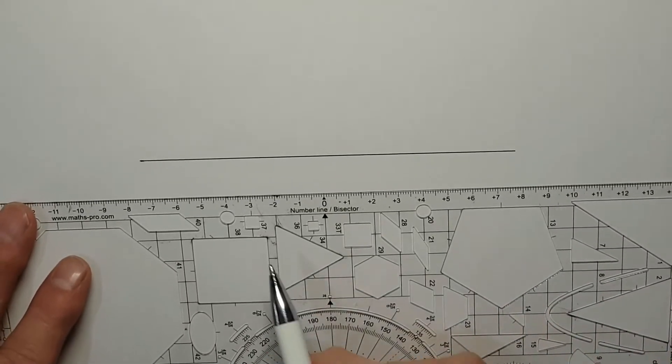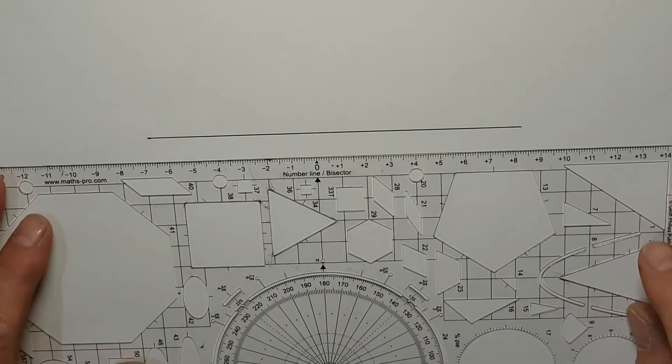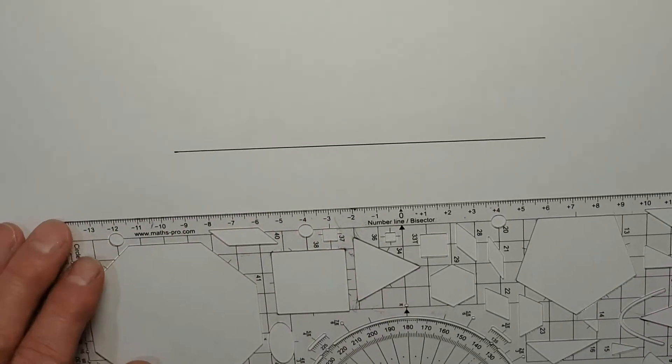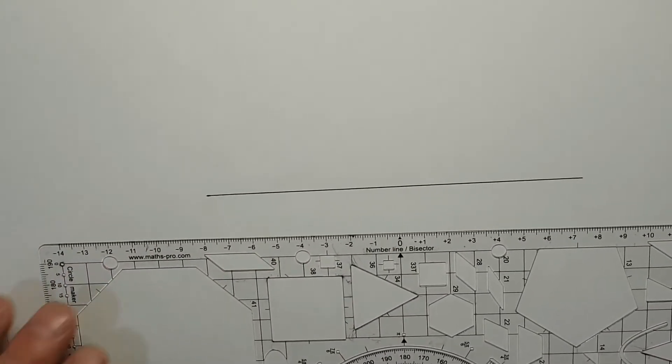You can use the number line bisector on GeoPro to bisect a line segment. Here I've drawn a segment, but let's say I didn't know where the center was.